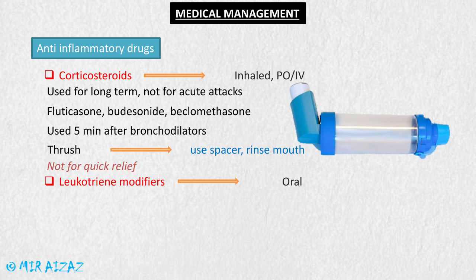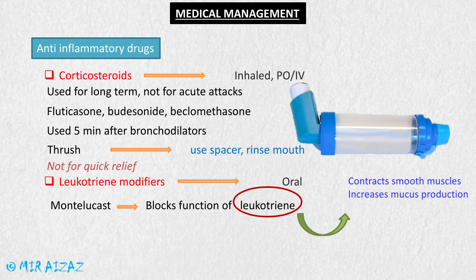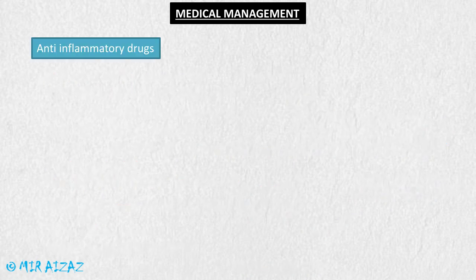The next class of anti-inflammatory agents is leukotriene modifiers, taken in oral form. The most important medication is montelukast, which blocks the function of leukotriene. Leukotriene is responsible for contracting smooth muscles and increasing mucus production, so blocking it relaxes the smooth muscles and decreases mucus production. These are also not used for the quick relief of asthma symptoms.